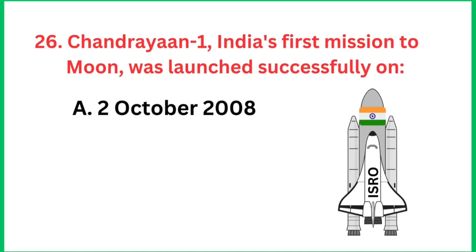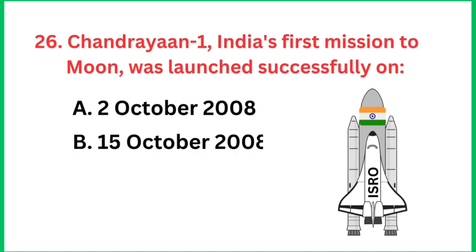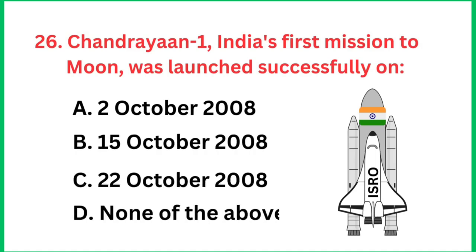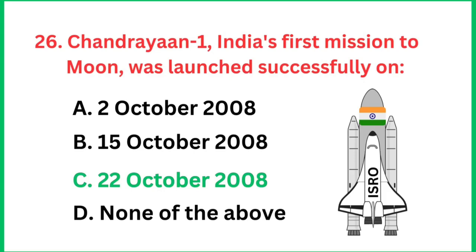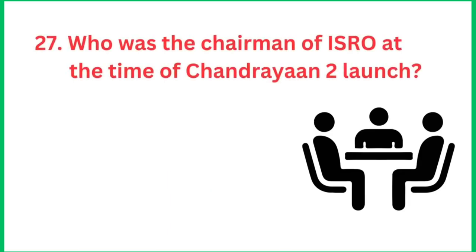Chandrayaan 1, India's first mission to the moon, was launched successfully on which date? The correct answer is 22nd October 2008.